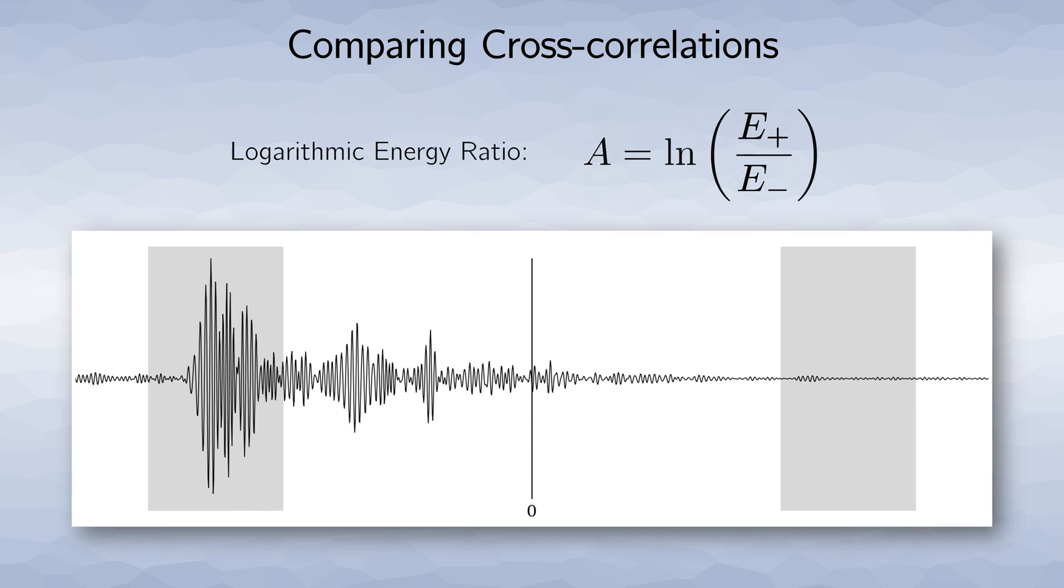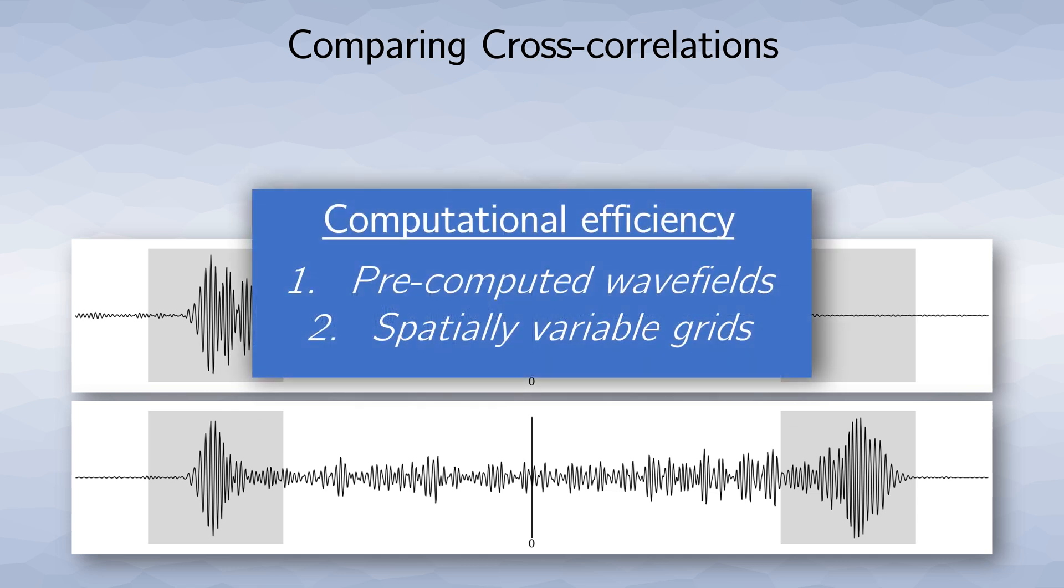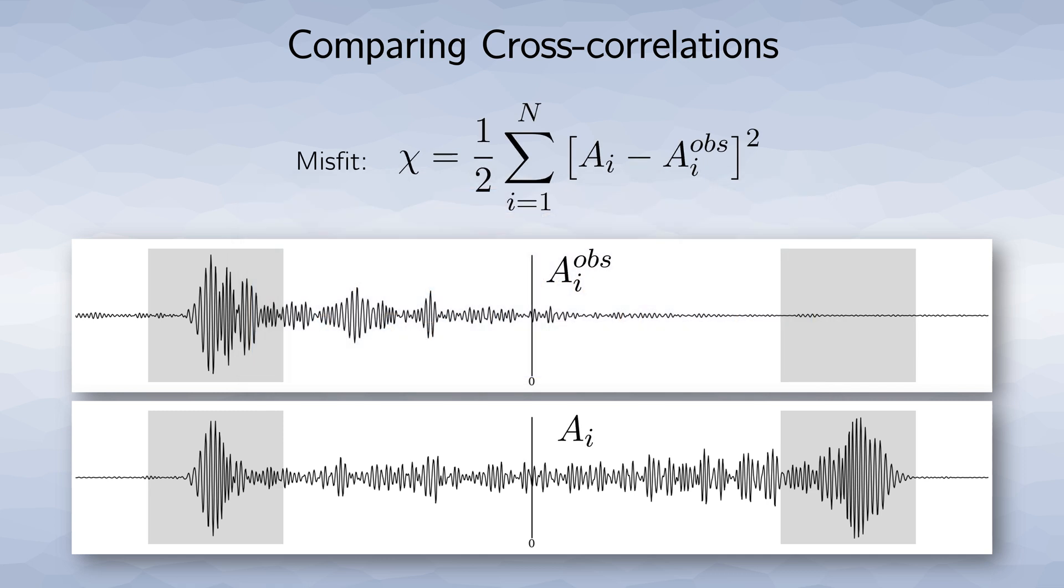The next step is to forward model a synthetic cross correlation for a starting distribution, which in our case is usually homogeneous in the ocean. The forward modeling is very efficient because we use pre-computed wave fields and spatially variable grids to reduce the computational cost. We compare the two measurements by calculating the misfit, which we then try to minimize in the inversion.